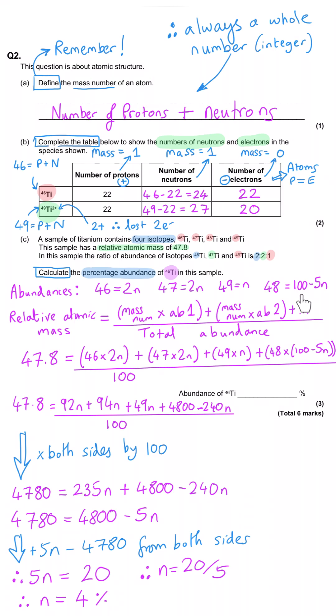If we return to our original abundance, which was a total of 100, which was why 48 was 100 minus 5n, that means that the abundance of 49 is 4% because n equals 4. 47 is 2 lots of 4%, so 8%. And 46, which is what we were interested in, is going to be 2 times 4 as well, so 8% abundance. And remember, we might have been asked to calculate the abundance of the mass 48 titanium, and that is 100 minus 5n, so that means that is 80%.